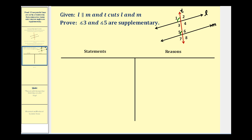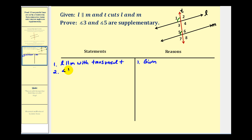We'll start by stating the given information that L is parallel to M with transversal T — that's given. Number two, we know that angle one is congruent to angle five by the corresponding angle postulate.